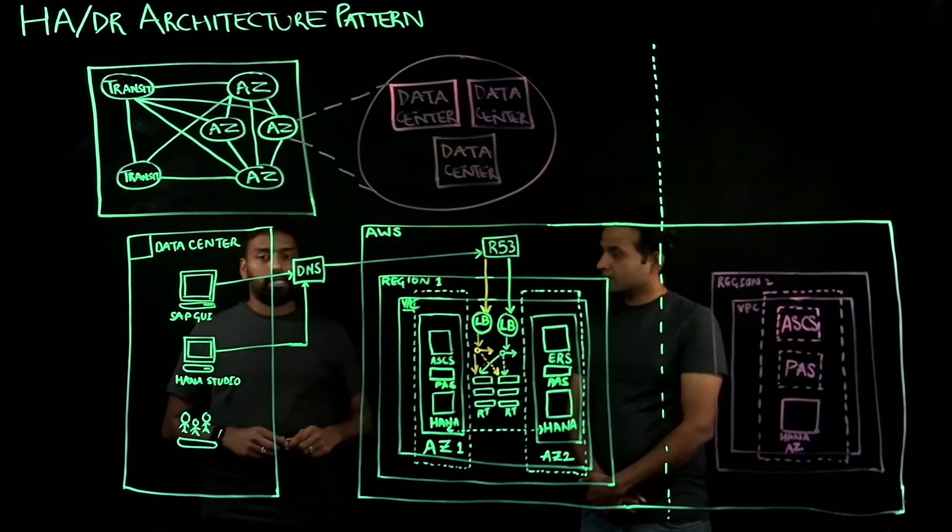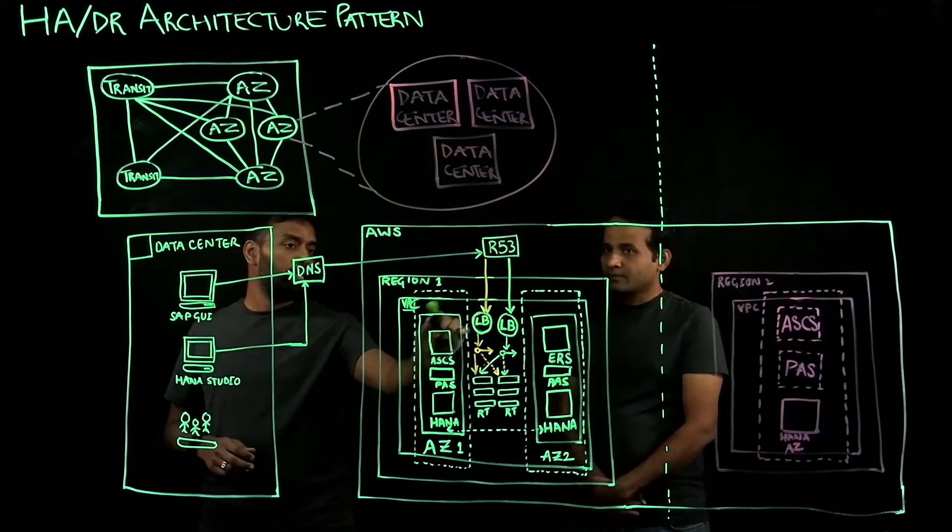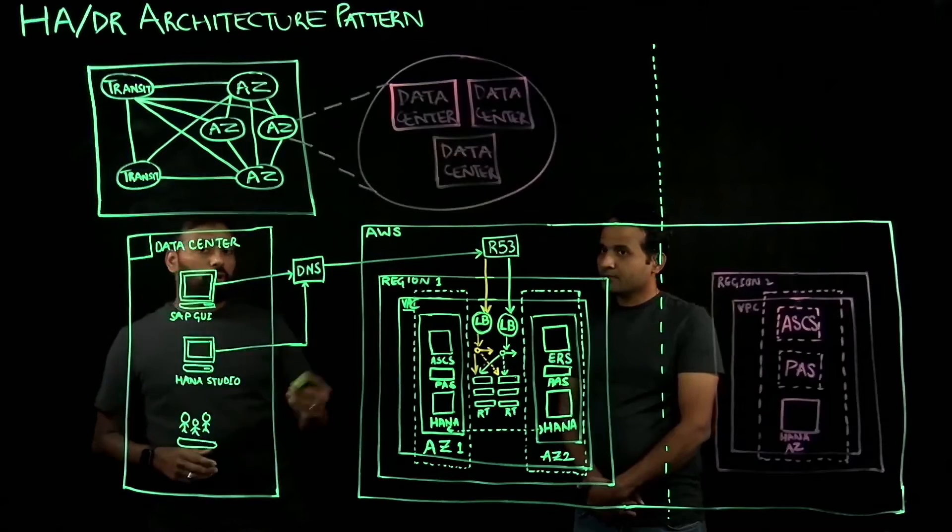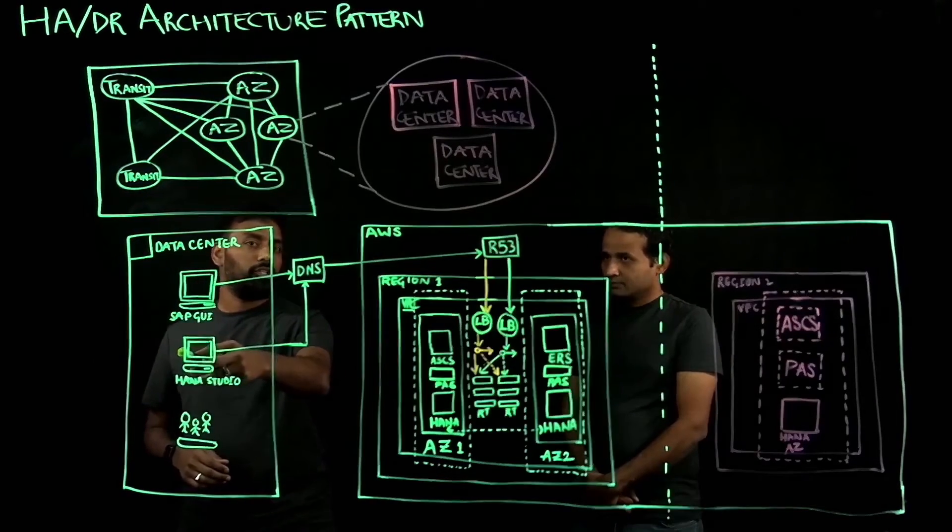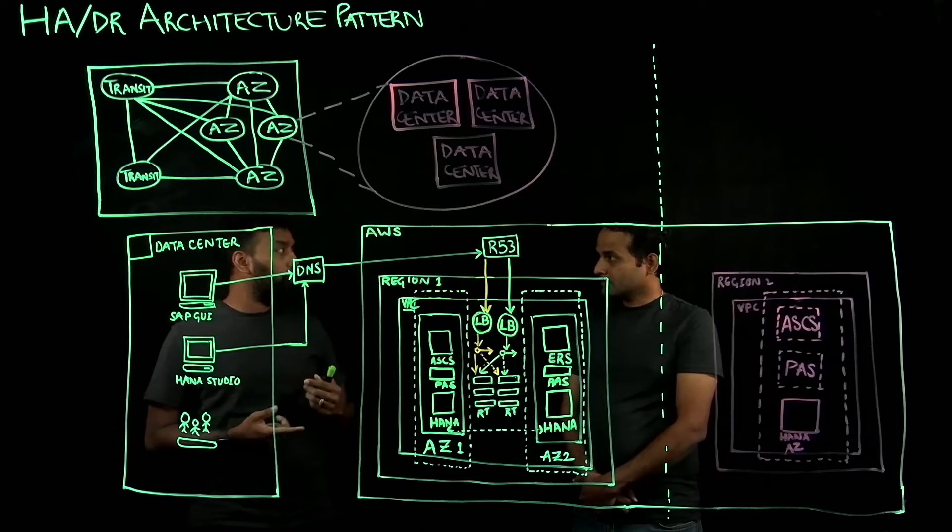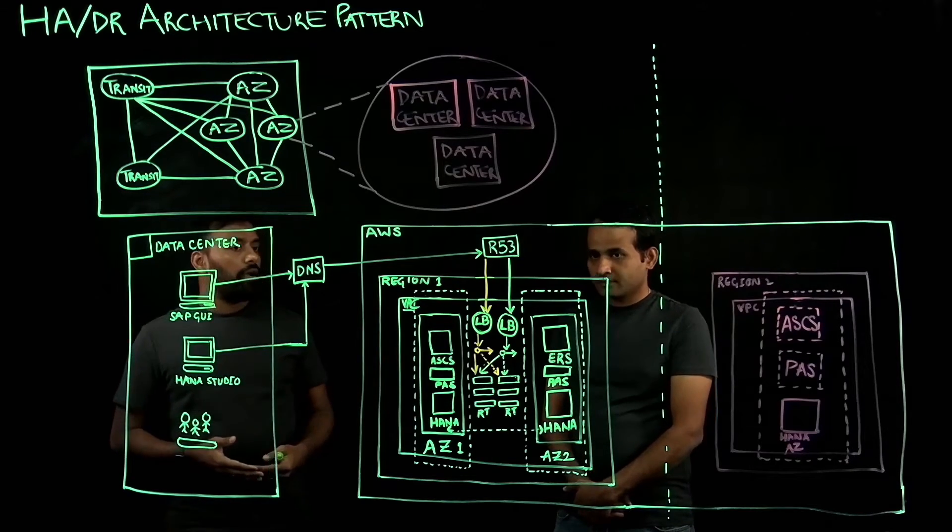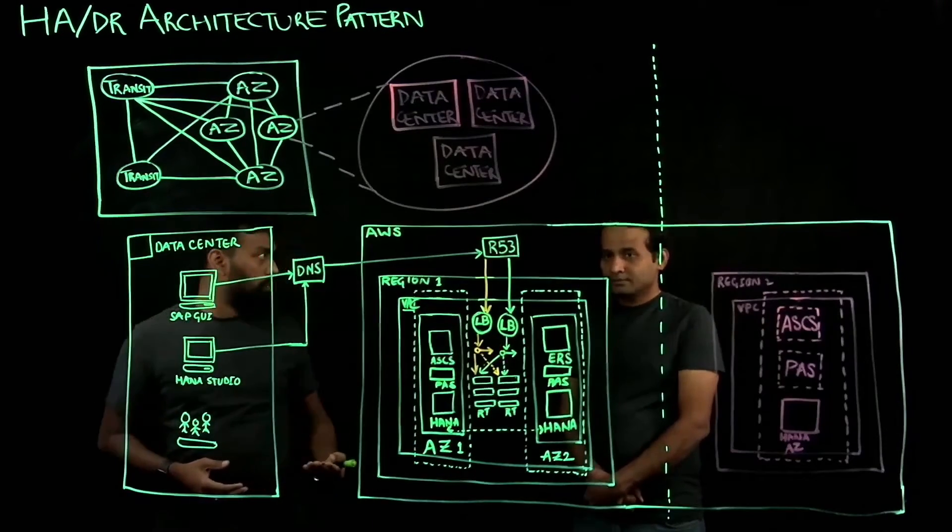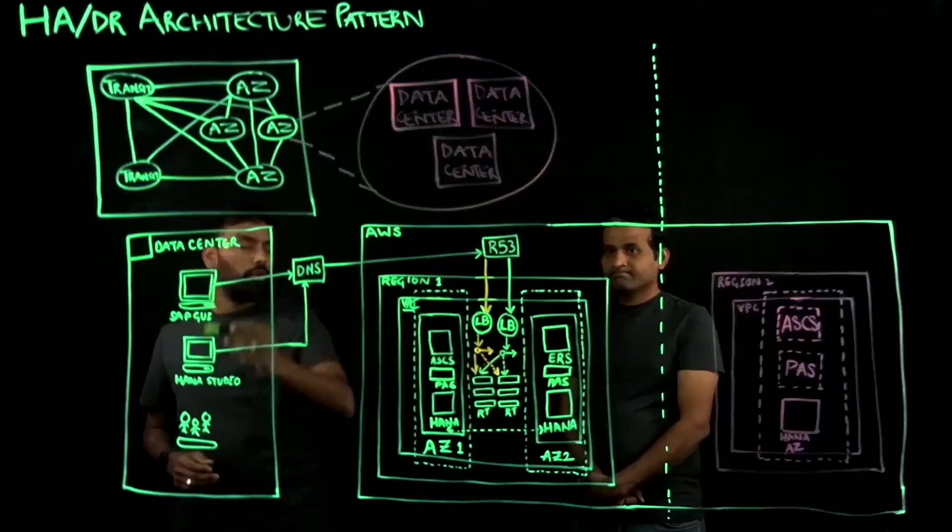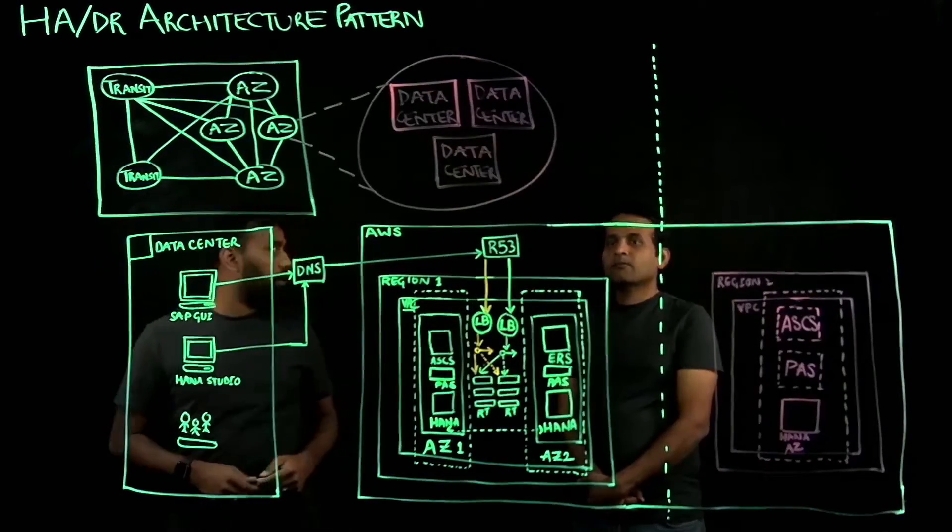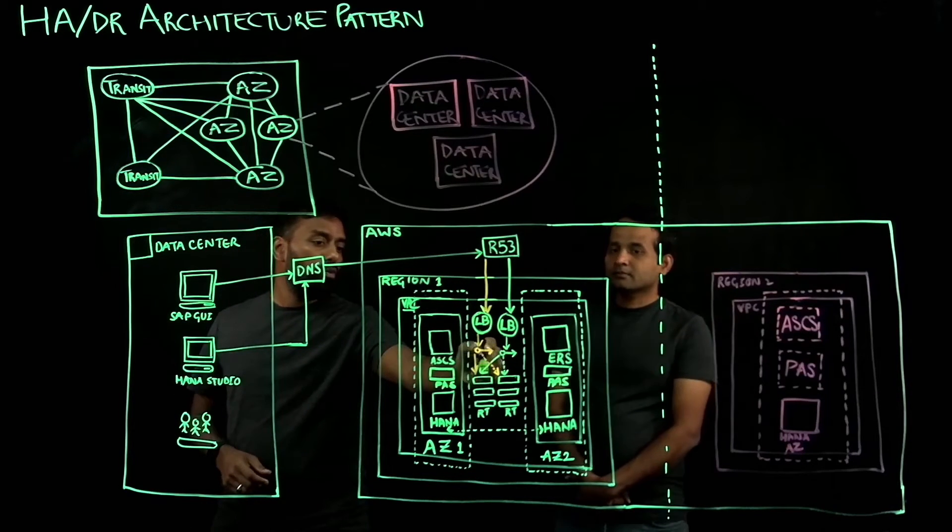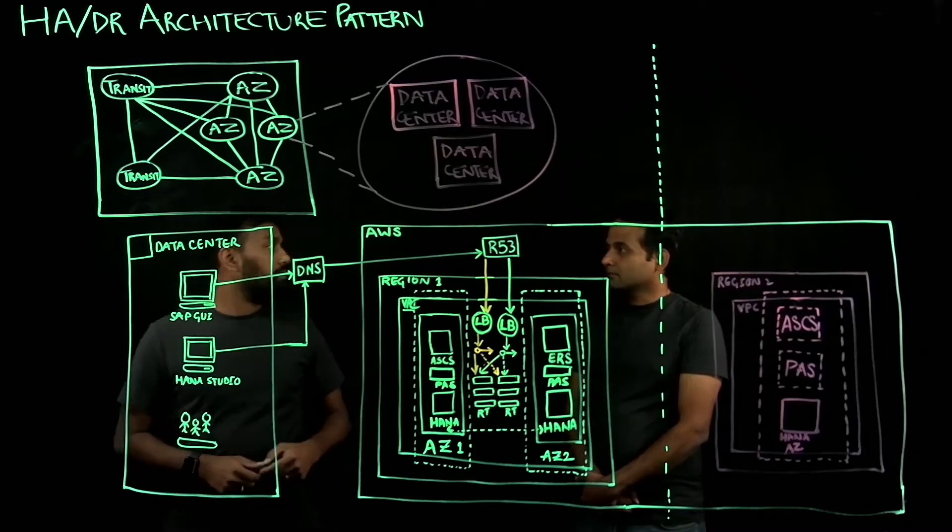Sure. I'm glad you asked that question because understanding the network pattern in case of an HA setup is really critical when we talk about high availability. As I mentioned, your user is connecting from SAP GUI via DNS, and within the VPC we leverage concepts called overlay IP address and route tables. We also use a network load balancer, which is a managed service. Essentially, the connection string for your SAP GUI would be your DNS name of your network load balancer, which points to the overlay IP address, which in turn, with the help of route tables, gets routed to your active instance at any given time.